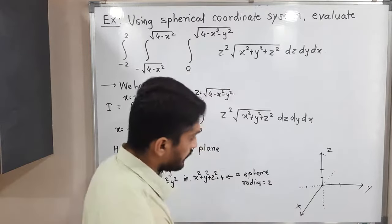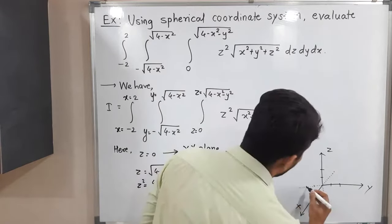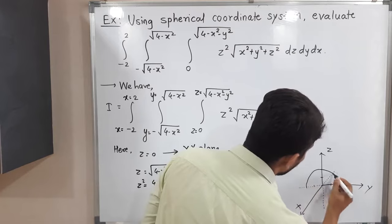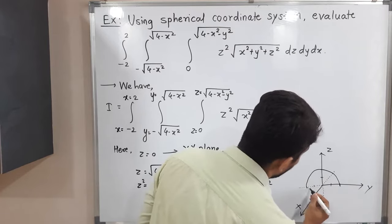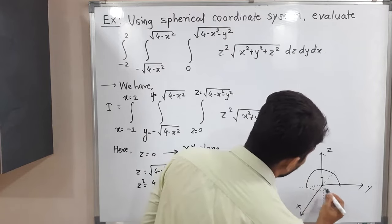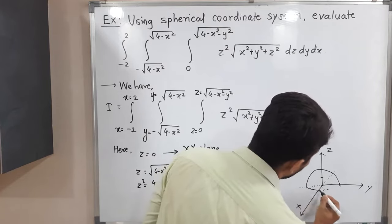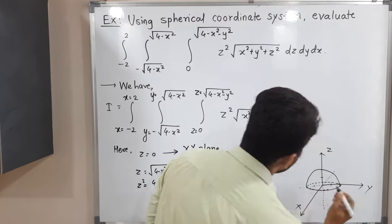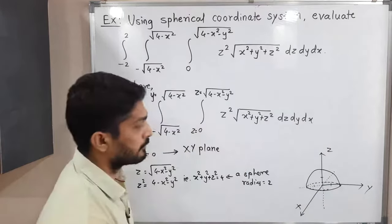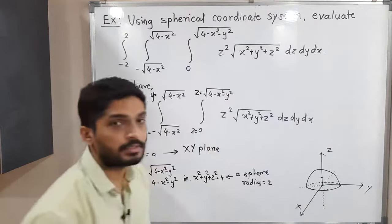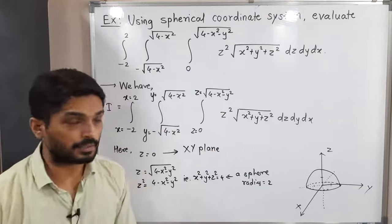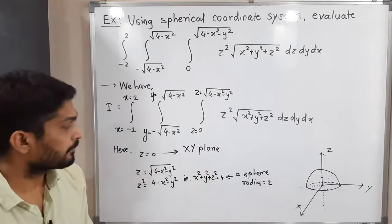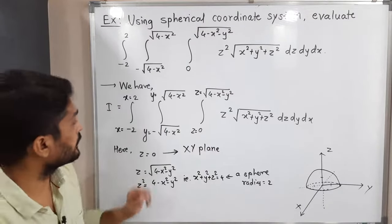So let me draw the upper half of the sphere here. This is the sphere — the upper half of the sphere, which you can also call a hemisphere. The radius of that sphere is two. Let us go further.